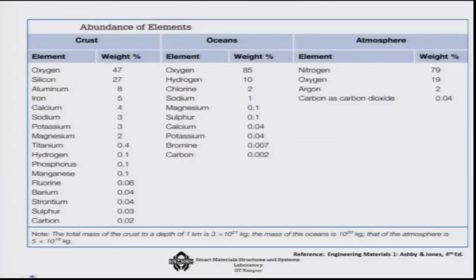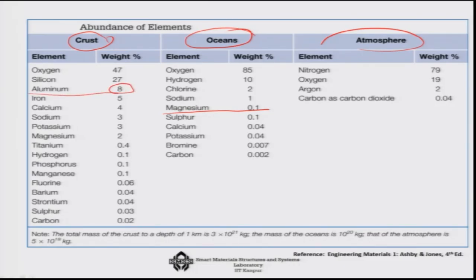Now let us look into the availability of materials. There are two groups: availability in the earth's crust and availability in oceans — from the ocean, for example, magnesium has a good supply and is also used as a structural material. However, most materials we use come from the earth's crust itself. In terms of abundance, aluminium is about 8 percent — highly abundant — followed by iron. Aluminium's processing cost is higher, which is why it is more expensive than steel despite being more abundant.